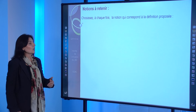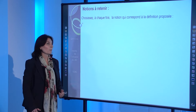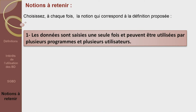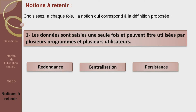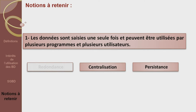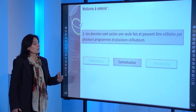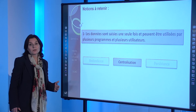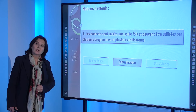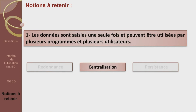Vous allez choisir à chaque fois la notion qui correspond à la définition affichée. Première définition : les données sont saisies une seule fois et peuvent être utilisées par plusieurs programmes et plusieurs utilisateurs. S'agit-il de la notion de redondance, centralisation ou persistance ? Cela ne peut pas être la redondance, qui signifie la présence de plusieurs copies de la même donnée. Ce ne peut pas être la persistance non plus. Ce sera donc la centralisation.